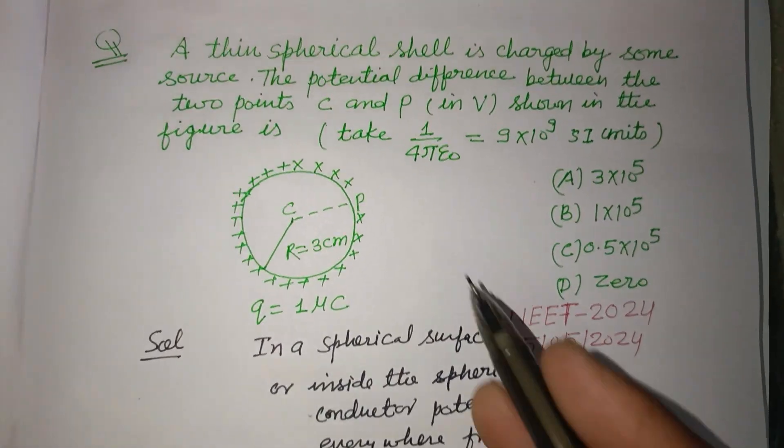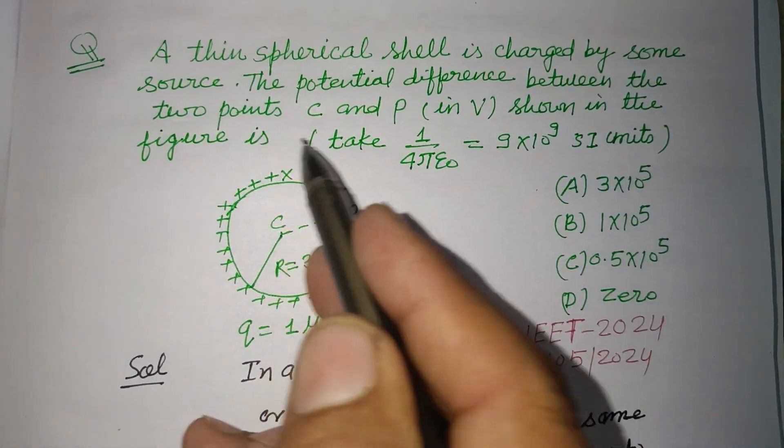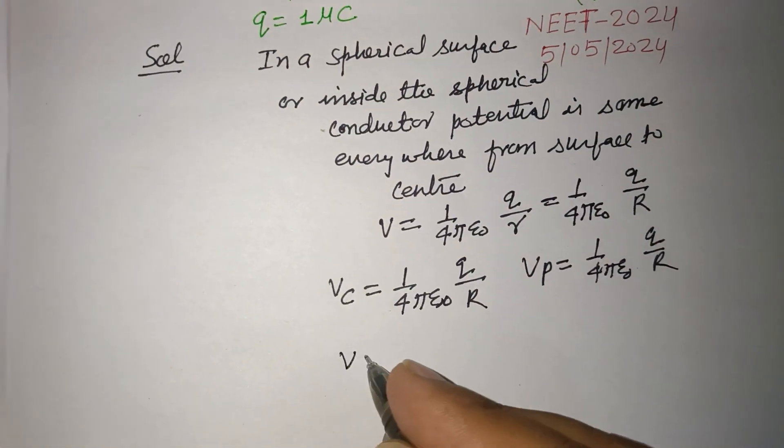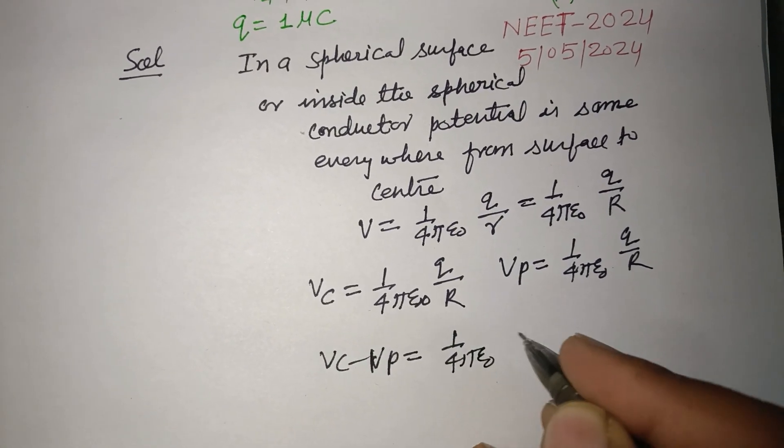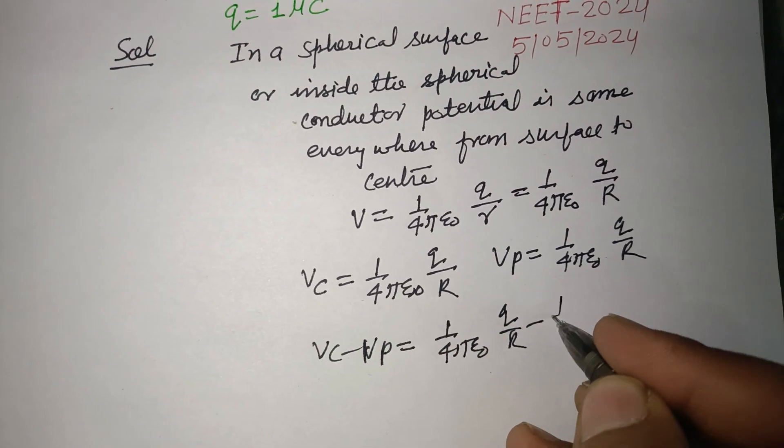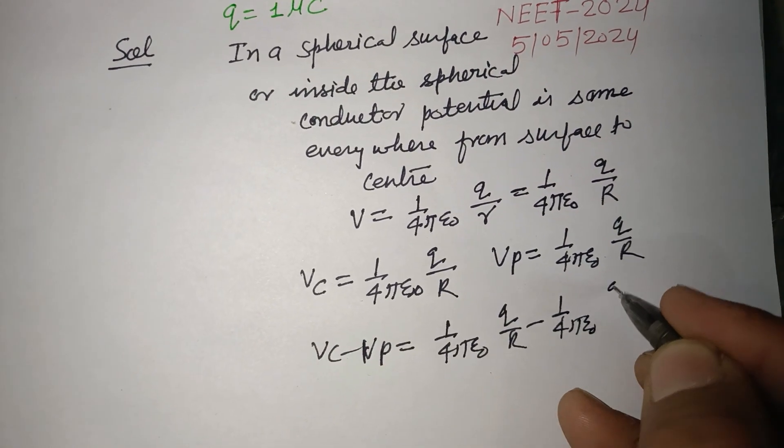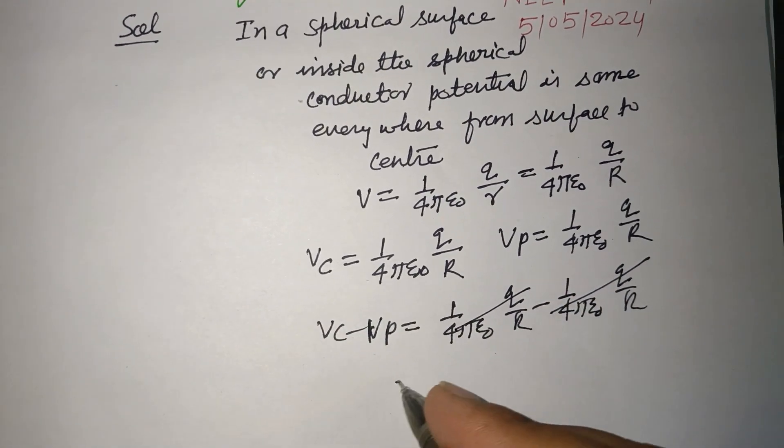Therefore, the potential difference between two points C and P. So Vc minus Vp equal to 1 upon 4 pi epsilon naught Q over R minus 1 upon 4 pi epsilon naught Q over R. This cancels out, we got 0.